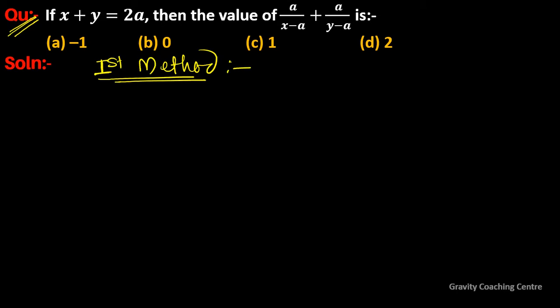So it's the first method. Given x plus y is equal to 2a, we can write this as x plus y equal to a plus a.